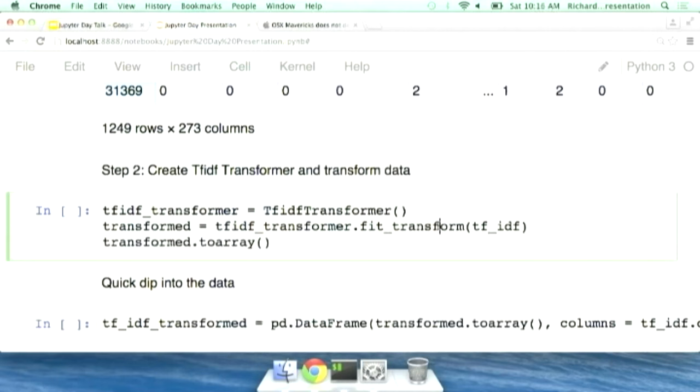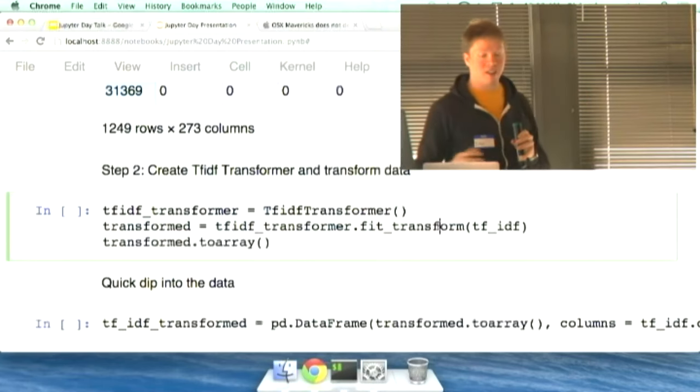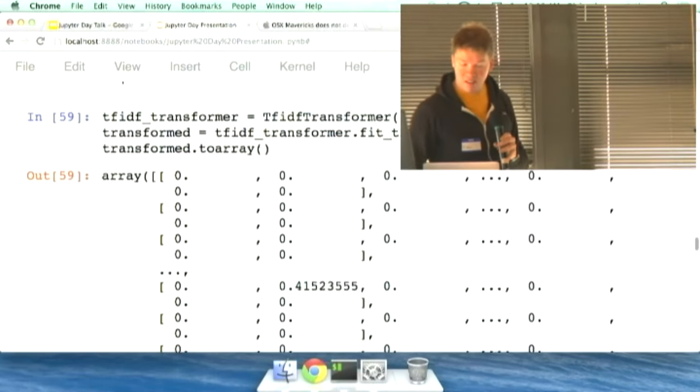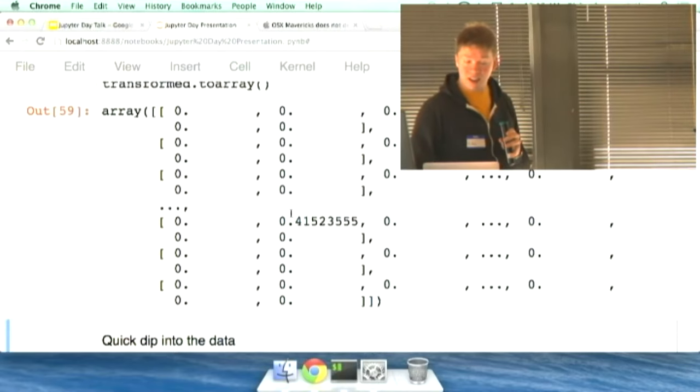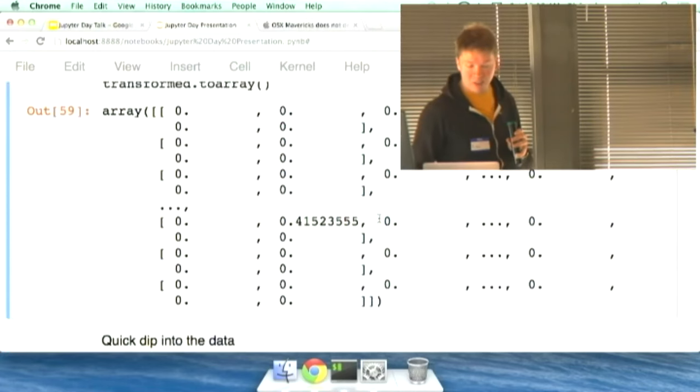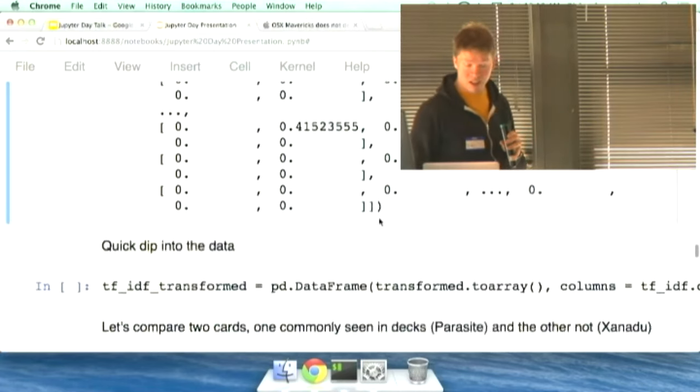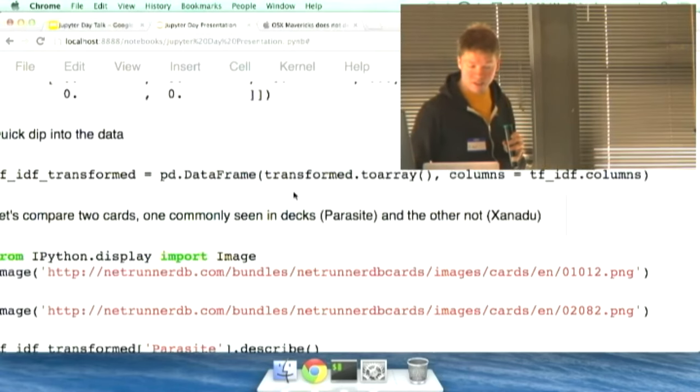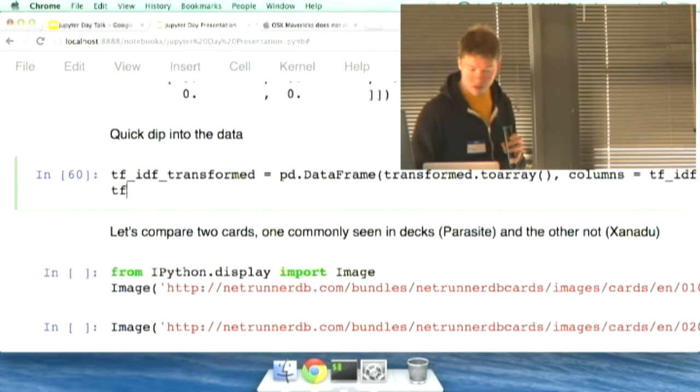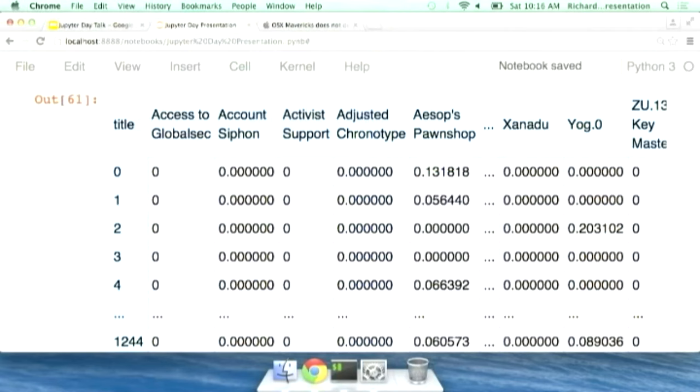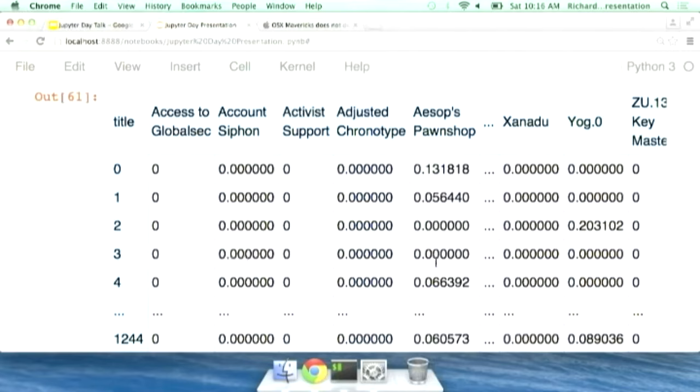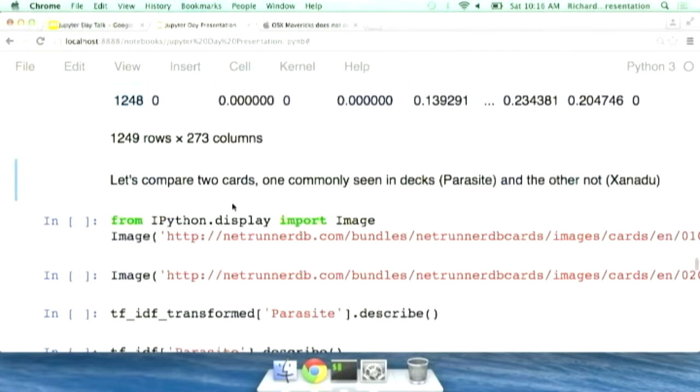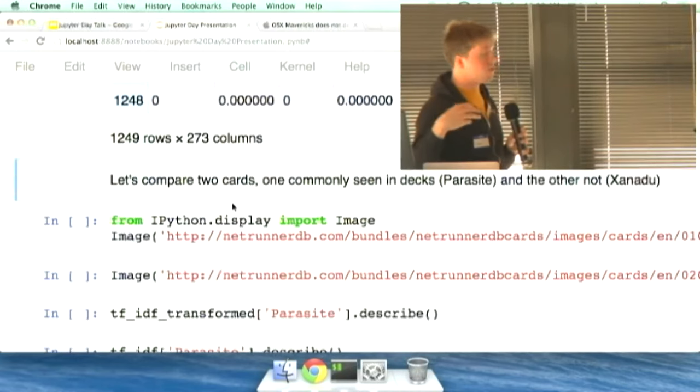So we're going to transform it using a term frequency inverse document frequency. This is basically saying let's take how often this occurs in a single deck, transform it by how often it occurs over all the decks. And this will tell us kind of like what's more unique and what's not. And so generally a lot of decks that don't have the cards are going to have zeros. Here's one that ends up having a kind of very unique card down there. I've also turned this into an array so we can send it into scikit learn. But we can also go through and turn it into a data frame just to kind of see what it looks like. And I'll even do that now. And so basically you can put it back into a data frame if you want to. It's going to give you basically float values from zero to some other higher number.